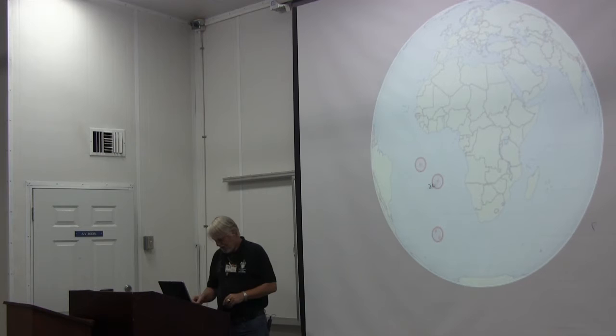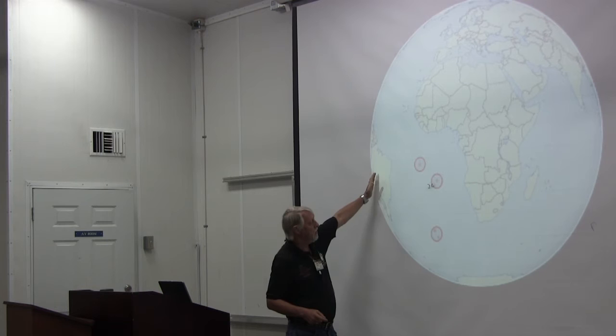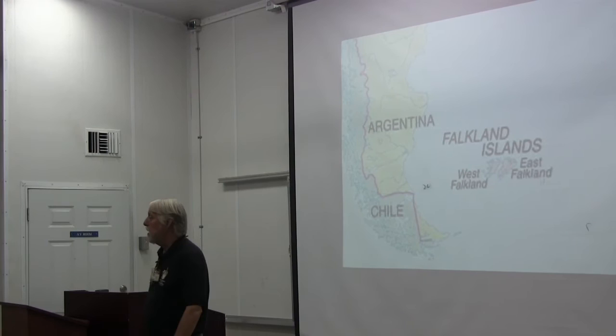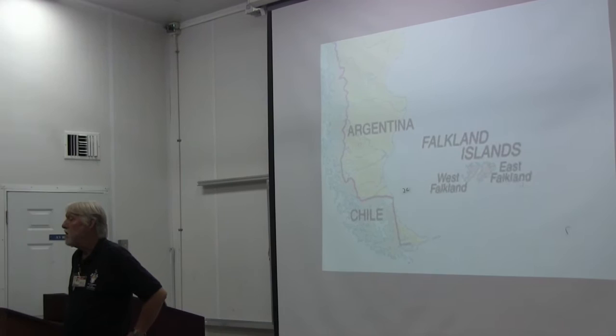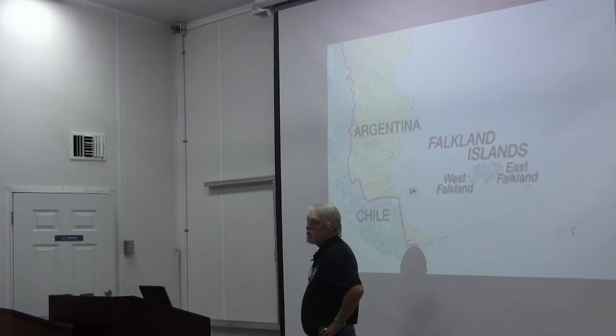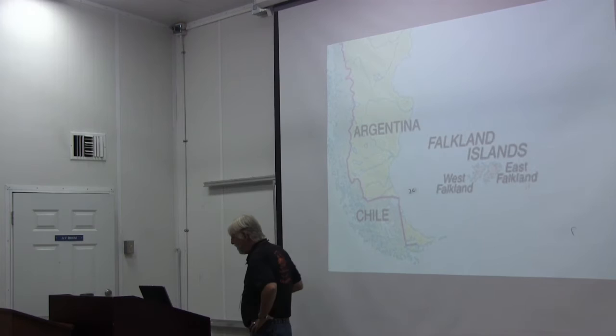Now we're going to come down further. Here you see South America and Antarctica again. We're going to come down here to the Falkland Islands. When you're speaking Spanish, it is polite to refer to them as the Islas Malvinas, because they are claimed by Argentina — and Argentina has a very good case, but the English have more guns, so it's administered by Britain. I call them the Falkland Islands in English and the Islas Malvinas in Spanish.